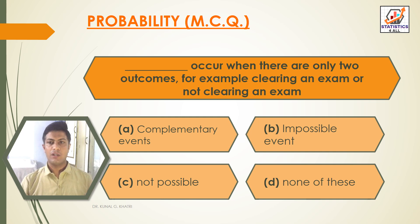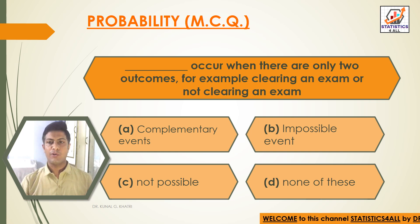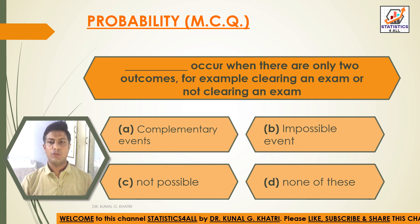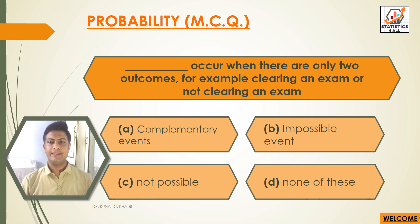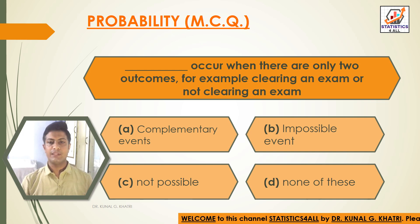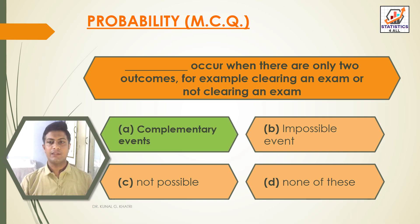Next question: dash occurs when there are only two outcomes, for example clearing an exam or not clearing an exam. Option A: complementary events. Option B: impossible event. Option C: not possible. Option D: none of these. The answer is Option A — complementary events occur when there are only two outcomes.